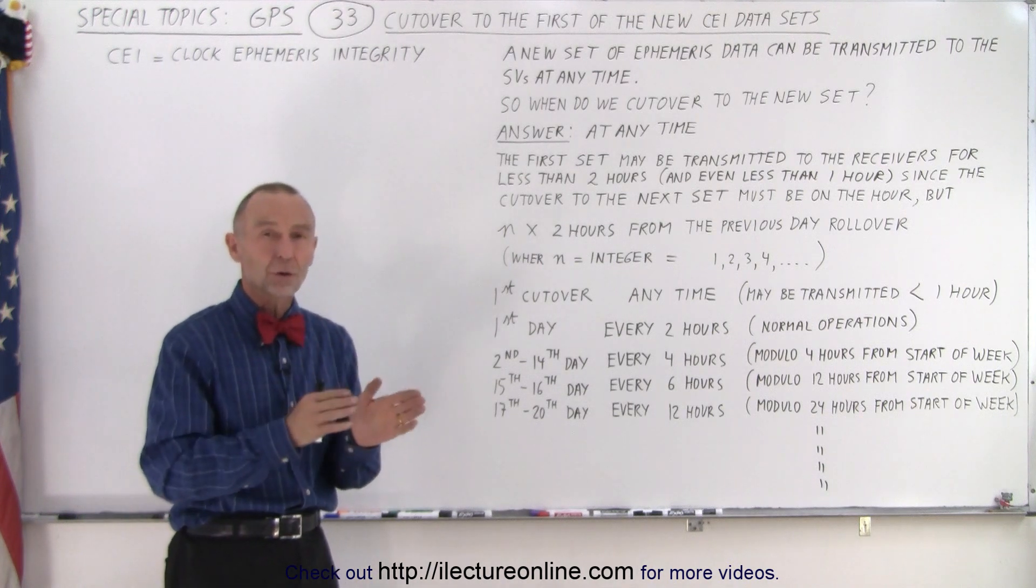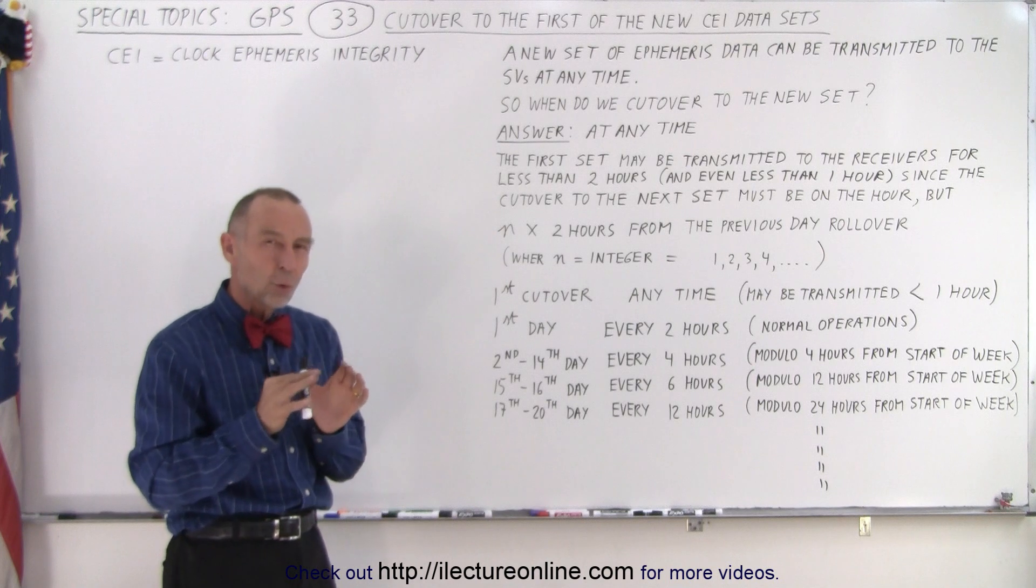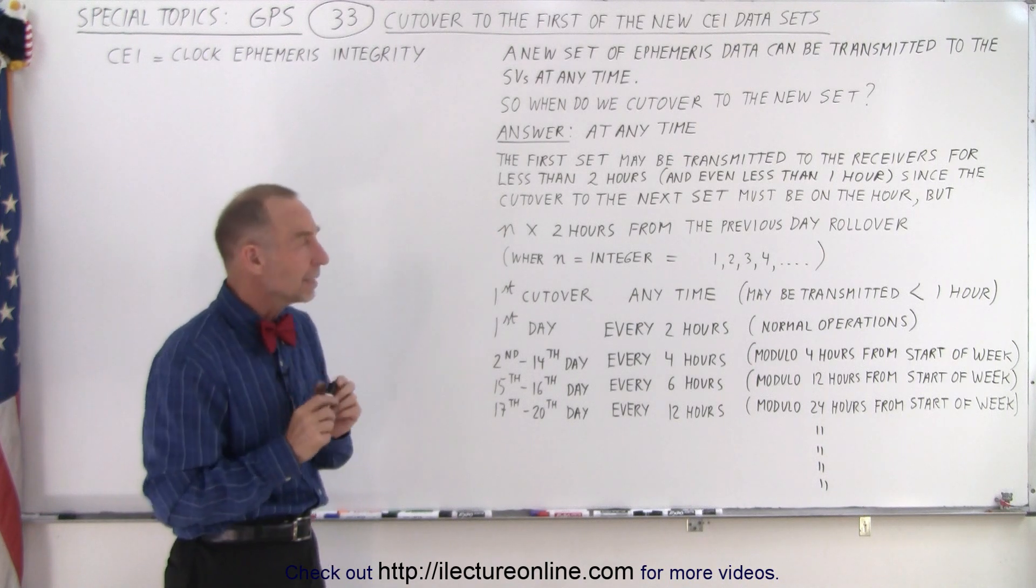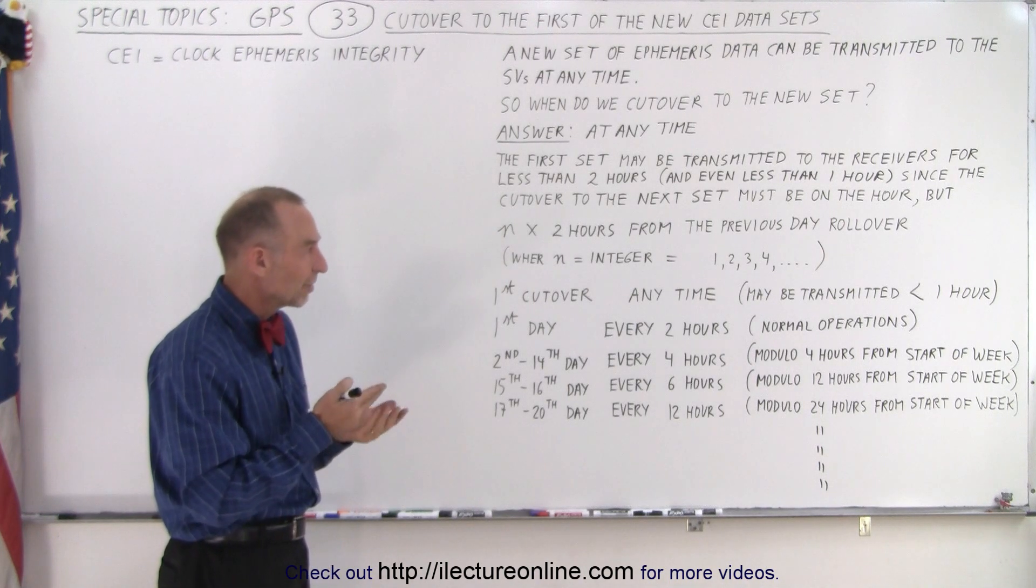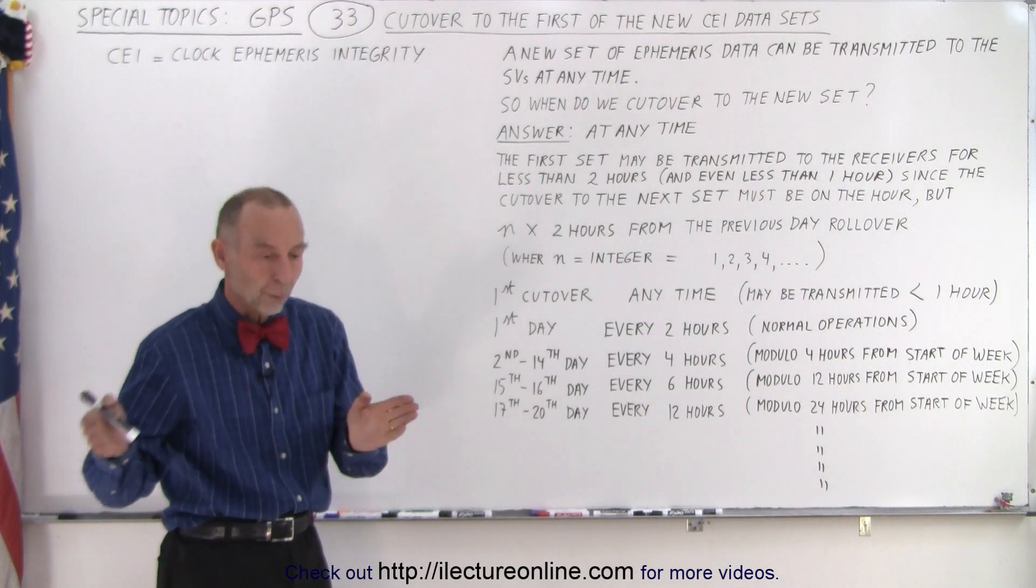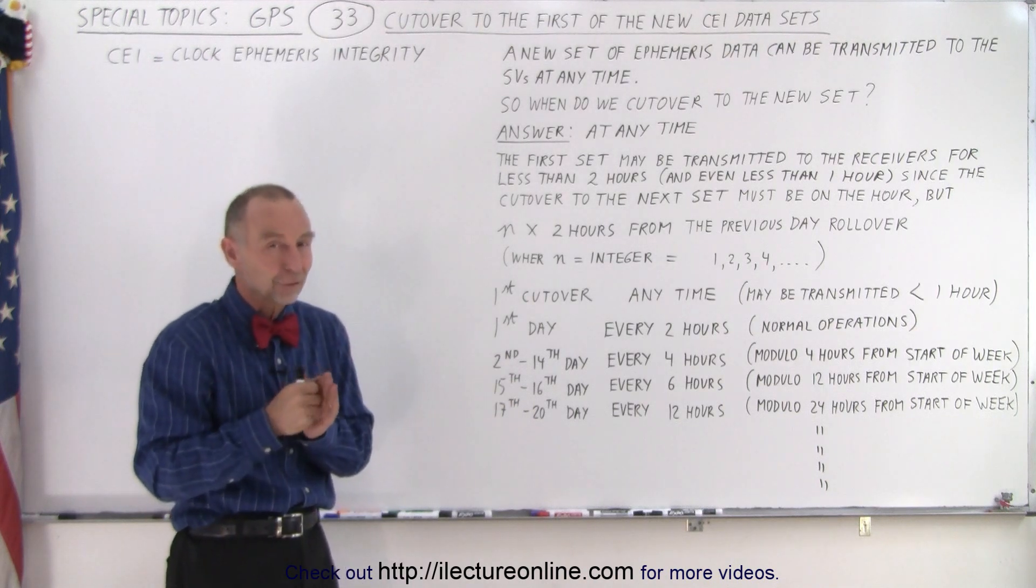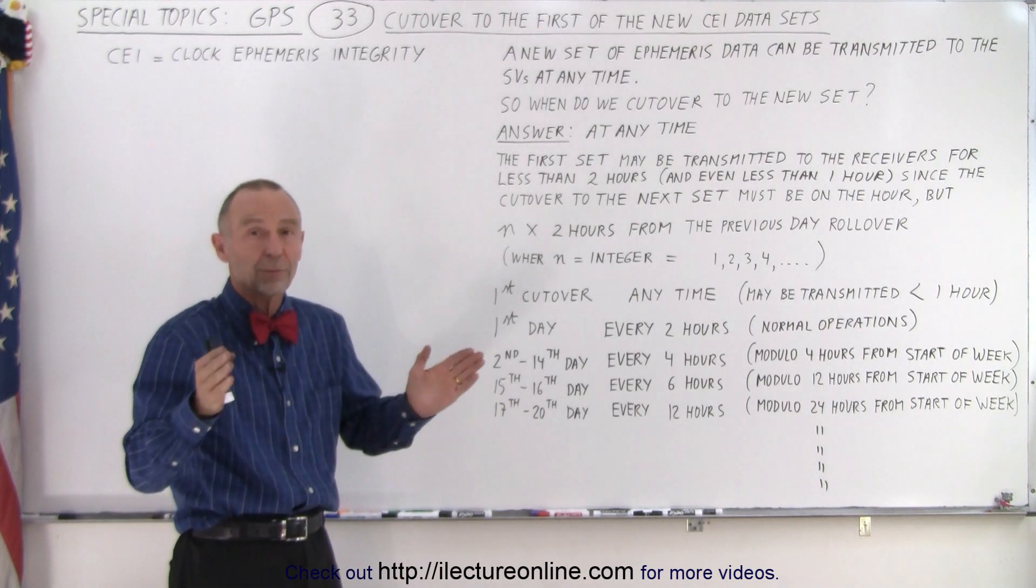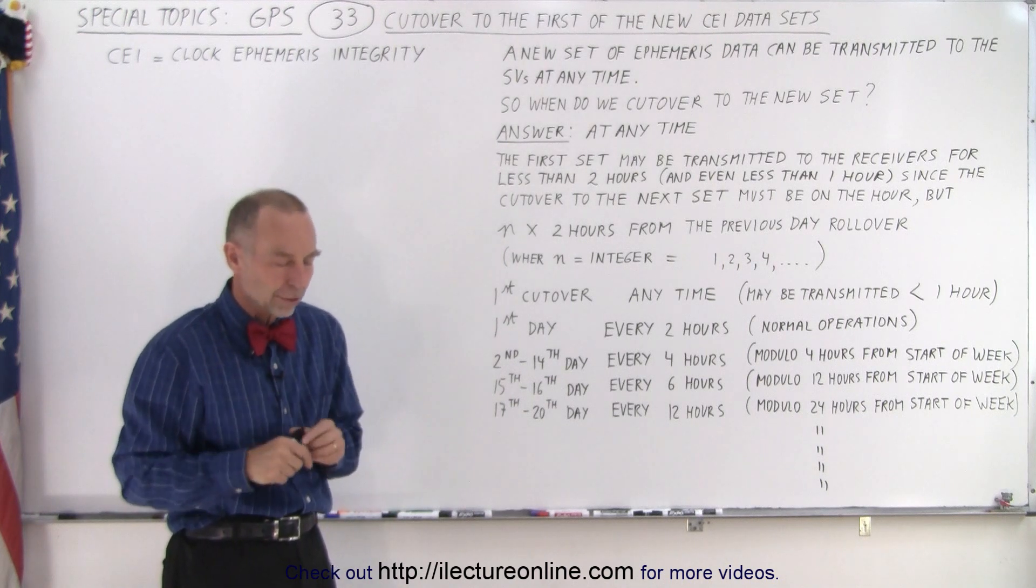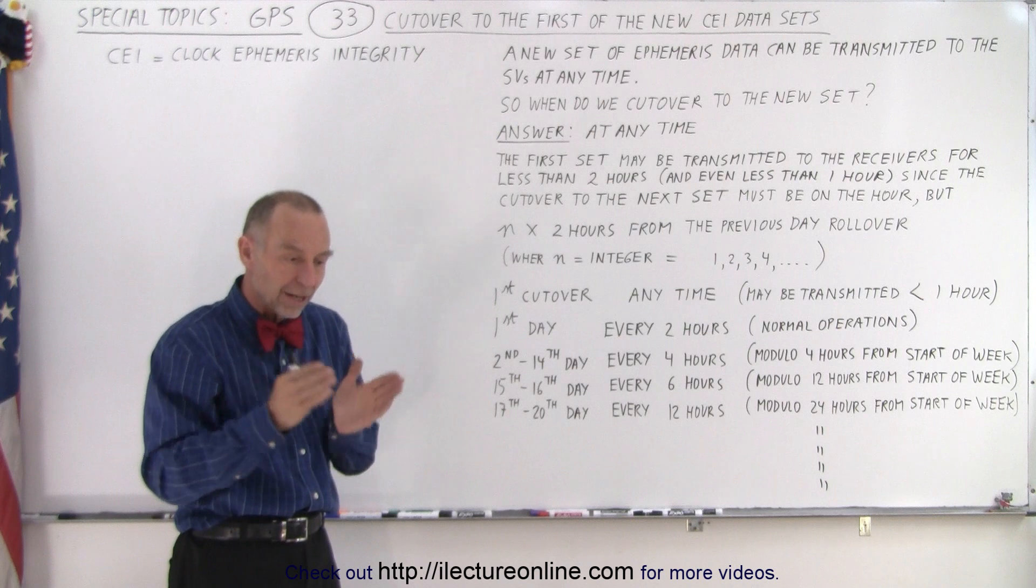Now, on the next cut over from the first to the second data set, the information isn't quite clear. The transmission of the first data set can be for less than an hour, because when we get to the top of the hour, you want to then go ahead and cut over to the next data set. So the first data set is not necessarily transmitted for the entire two-hour period.